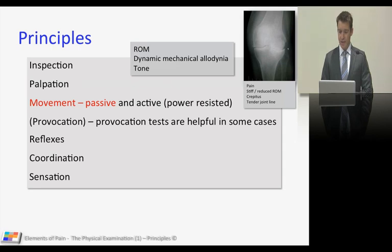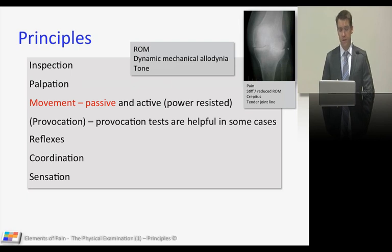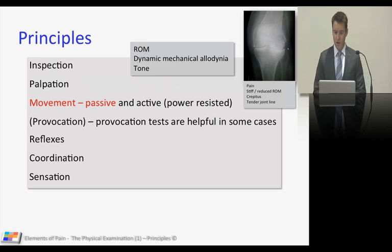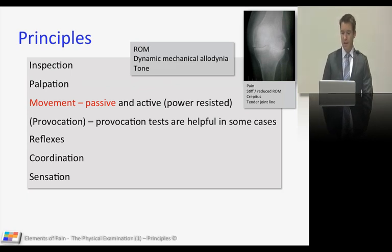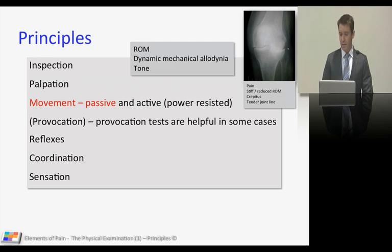As you can see, there's an X-ray there to remind us that one of the commonest things you're going to find when you examine joints, particularly in elderly people, is osteoarthritis. They're painful, they've got a reduced range of movement, there could be some crepitus, and of course there's a tender joint line. The X-ray features are classical: narrowing of the joint space, subchondral osteosclerosis, subchondral cysts forming on the lateral aspect, and osteophytes.